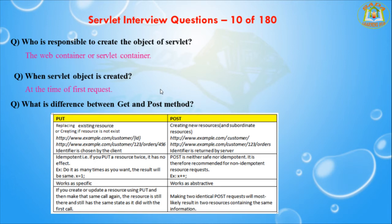In the GET method, a limited amount of data can be sent because data is sent in the header. In the POST method, a large amount of data can be sent because data is sent in the body. GET is not secured because data is exposed in the URL bar, whereas POST is secured because the data is not exposed in the URL.